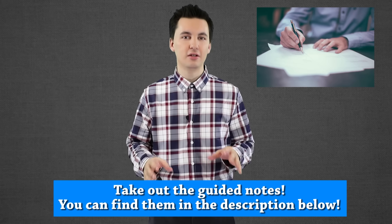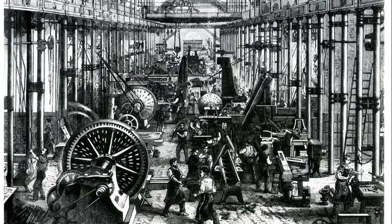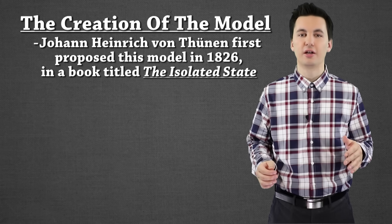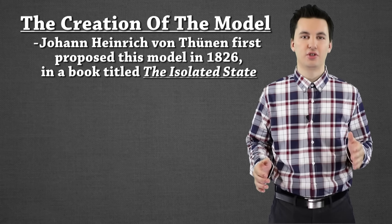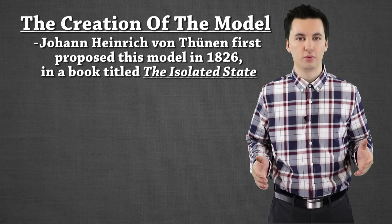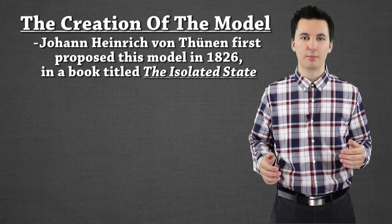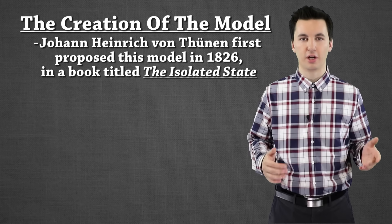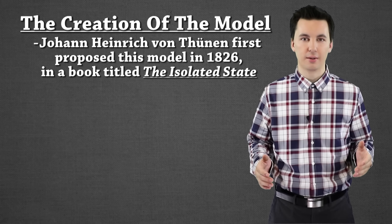When we get into this model, it's important to understand that this model was created before the Industrial Revolution. Von Thunen first proposed this model in a book titled The Isolated State. This is where Von Thunen started to actually look at how land was used. Von Thunen was curious about why farmers produce certain crops in certain areas, so he created this model to try and explain it.